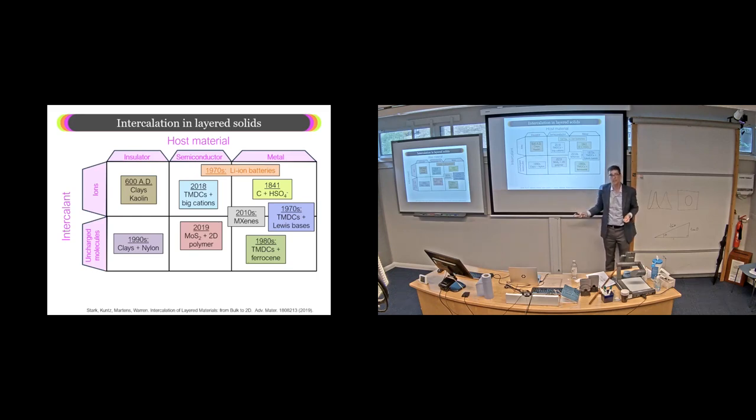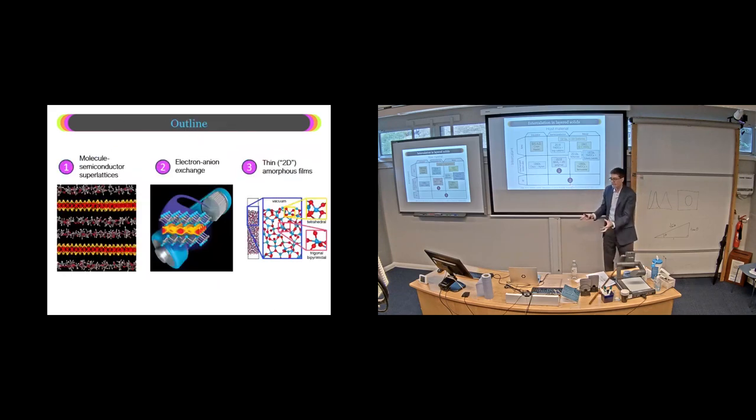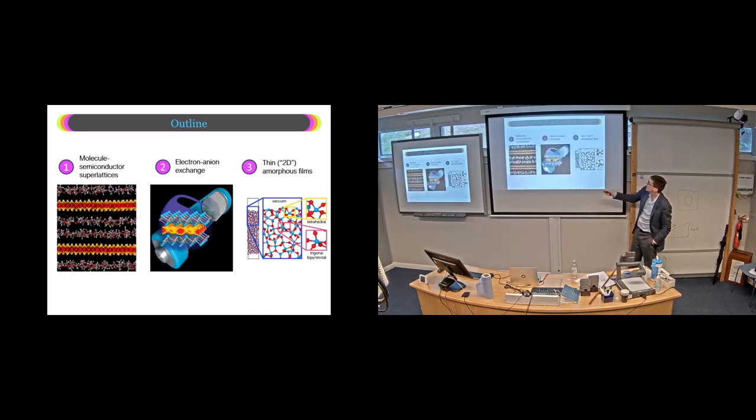From all this work up through 2010, you can see that there's one or two areas on this plot that really have not been investigated heavily, which are these semiconductor materials that either have ions or uncharged molecules. That changed in 2018 with some prominent papers in Nature where people figured out how to bring in very large cations into transition metal dichalcogenides while retaining the semiconductor properties. And then in 2019, people actually figured out how to mechanically stack polymers with 2D polymers. So these were kind of the first examples in these categories where these semiconductor materials were being intercalated.